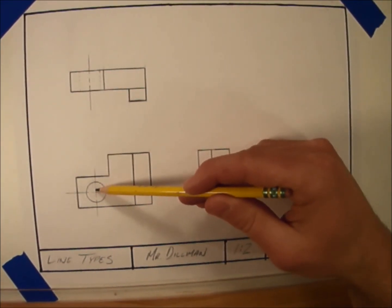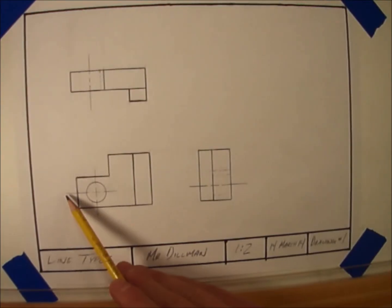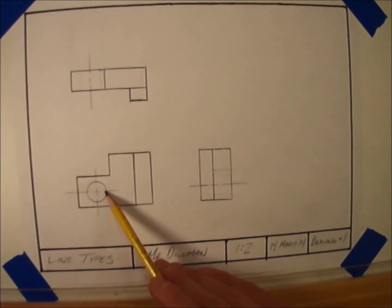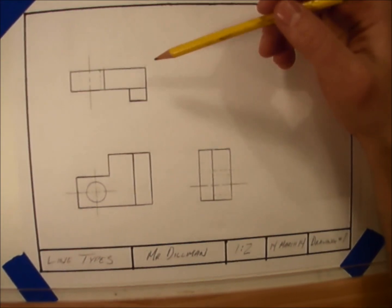Next up are center lines. Center lines show up whenever we have a hole in the object we're drawing. They're a little lighter than object lines and are basically a straight line with a single dash in the middle of it.